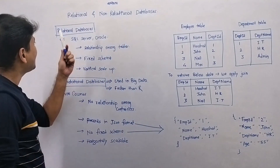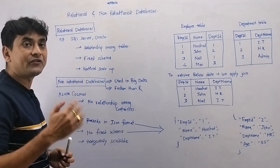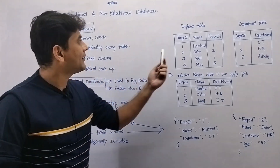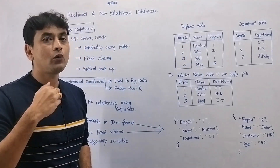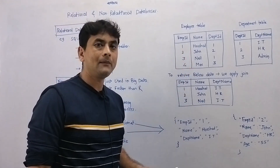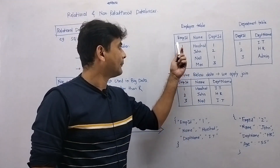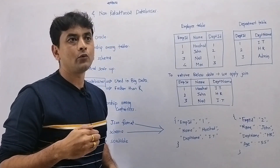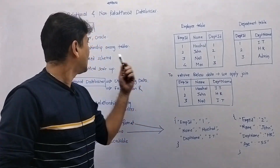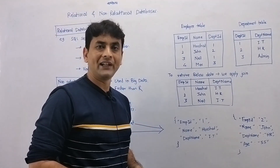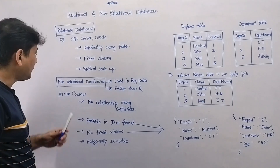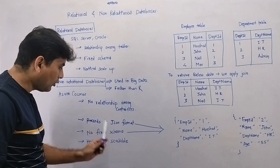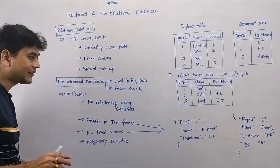The second point: in relational databases there is a fixed schema, meaning the structure of a database table is fixed. For example, if we have an employee table and want to add a new row, we provide three values — employee ID, name, and department ID. If we try to add a row with four values, say including age as well, SQL Server or Oracle will not accept that query and will throw an error. But in non-relational databases, records are in JSON format and there is no fixed schema.